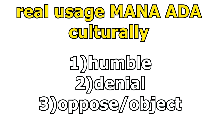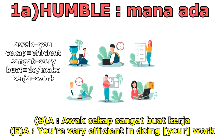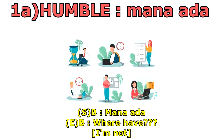For the first example of being humble: someone tells you, "awak cekap sangat buat kerja" — meaning you are very efficient in doing your work. You know the person is saying the truth, but you're trying to be humble, so you say, "mana ada?" So "mana ada" here, if you directly translate it, would be "where have" — but we're not talking about that. We're talking about "I'm not." You cannot directly translate this one.